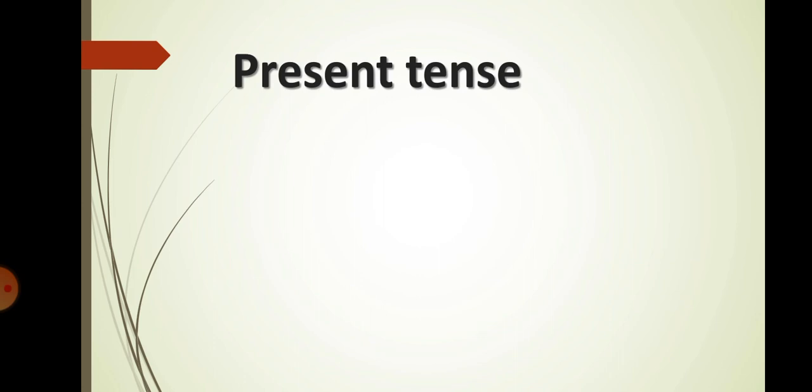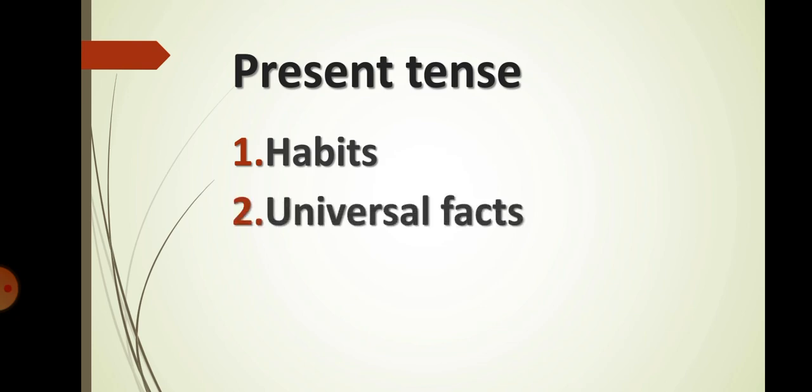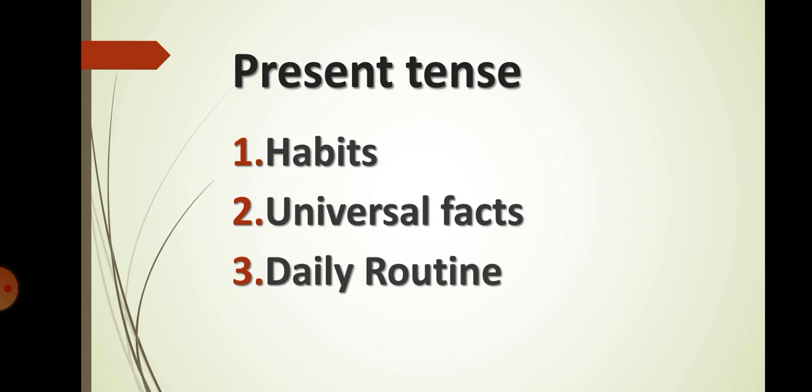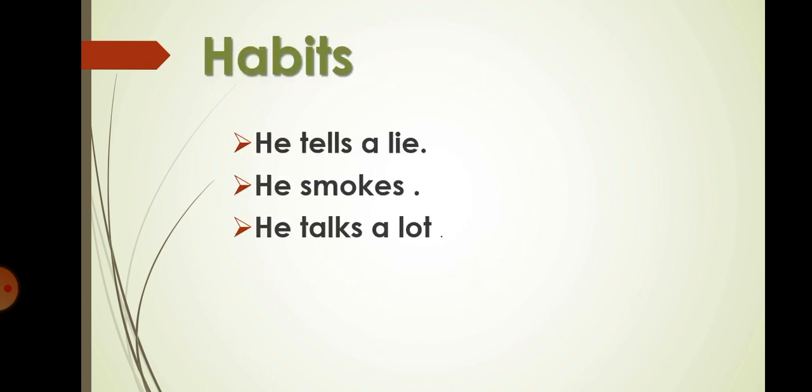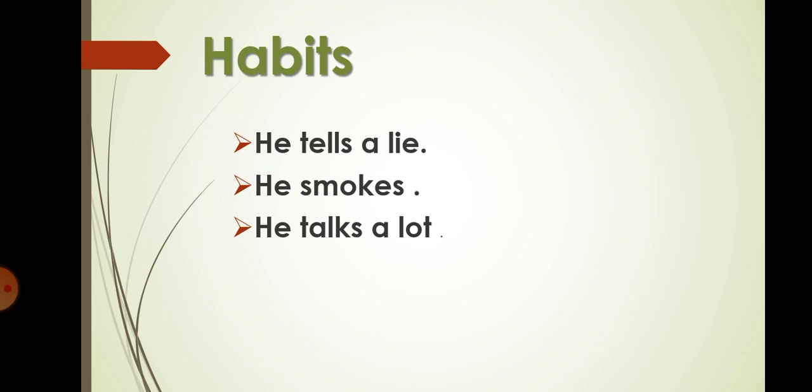What is present indefinite tense? It is one of 12 tenses that we use to show habits, universal truths, and daily routines. If we talk about habits, we can say that habits are things we do often or regularly. He tells a lie. This is his habit because he does this every day or time. He smokes or he tells a lie. If we talk about facts, then we can say that means the truth. Human dies and sun rises from the east.